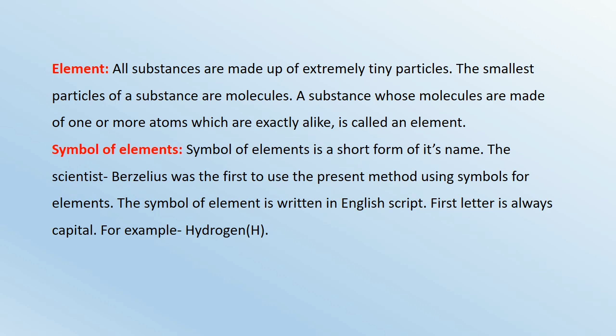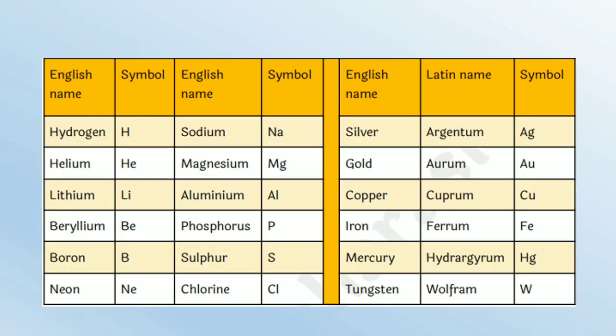For example, Hydrogen. There are some symbols of elements given in English name and some in Latin name. For example, Hydrogen is H, Magnesium is Mg, Phosphorus is P. From Latin names, Silver is Argentum and symbol is Ag. The Latin name of Iron is Ferrum and symbol is Fe.